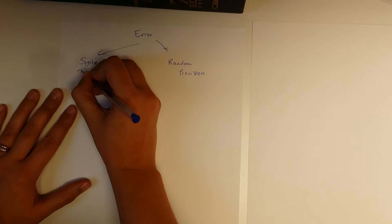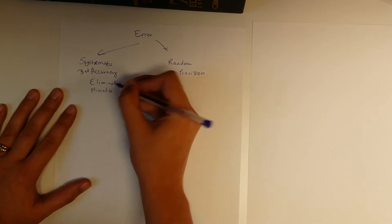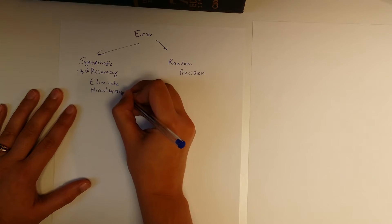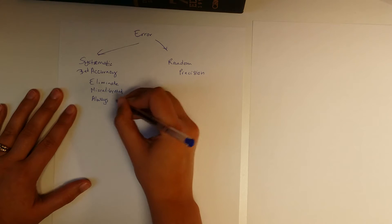By definition we can in theory identify and eliminate systematic error. So it means that we've got bad accuracy. An example would be miscalibrated equipment, and one of the characteristics of systematic error is that it's always reproducible in the high or low.